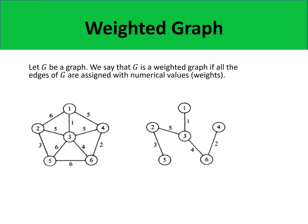A graph is said to be a weighted graph if all the edges of graph G are assigned with numerical values or weights. The two graphs on your screens are examples of weighted graphs because all the edges of the given graphs are labeled with numerical values.